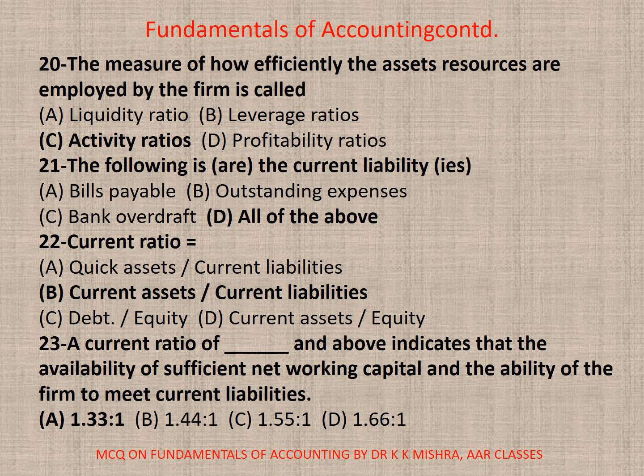Question 21: The following are the current liability or liabilities — A. Bills Payable, B. Outstanding Expenses, C. Bank Overdraft, D. All of the above. Correct option is D. All of the above.